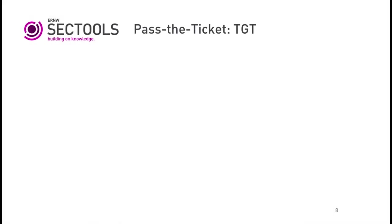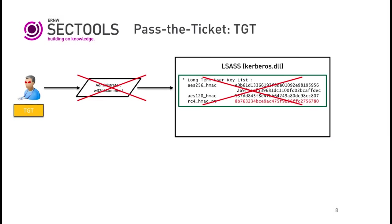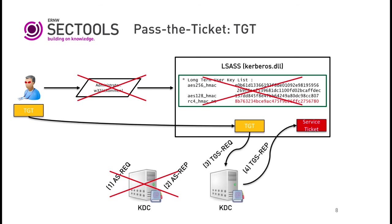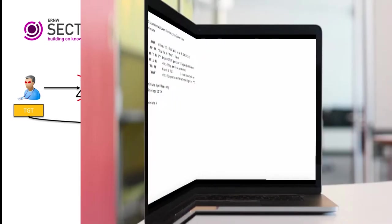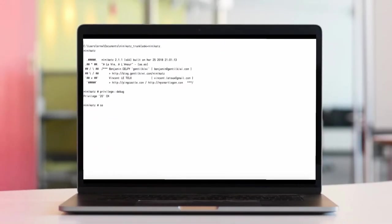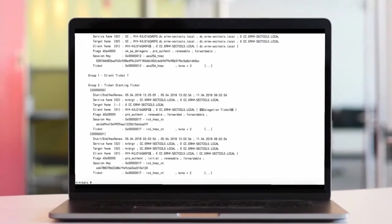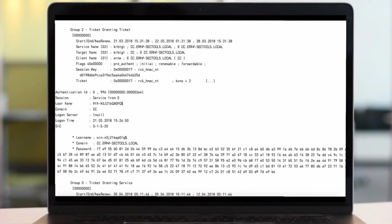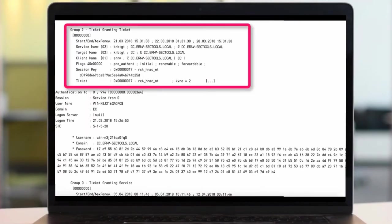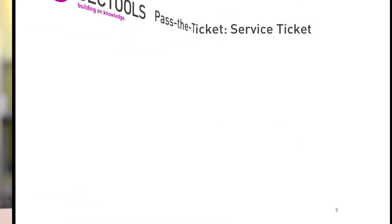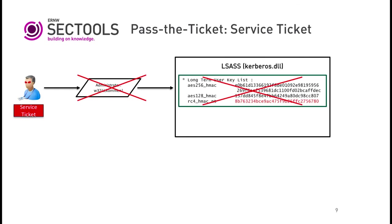Pass the ticket: the attacker injects a valid TGT into the LSASS process, requests a service ticket, and accesses the resources. Mimikatz can also extract tickets directly from the LSASS process memory, and the same can be done with a service ticket.